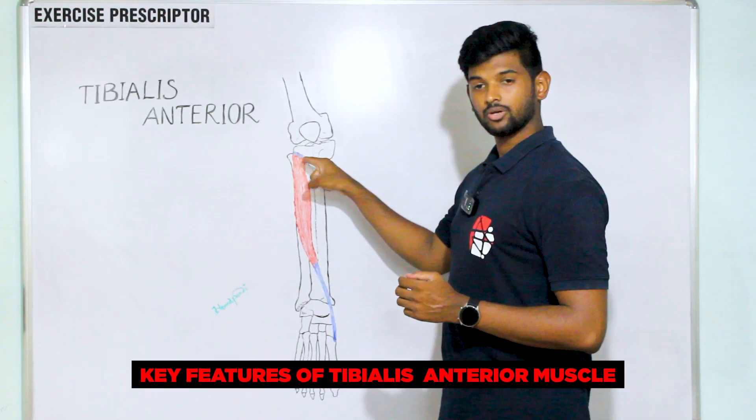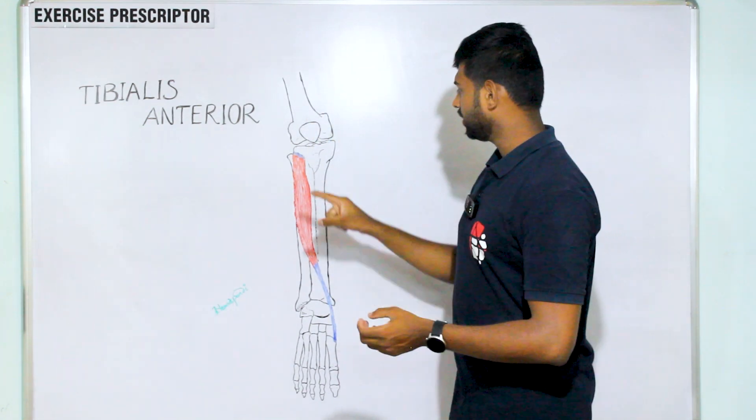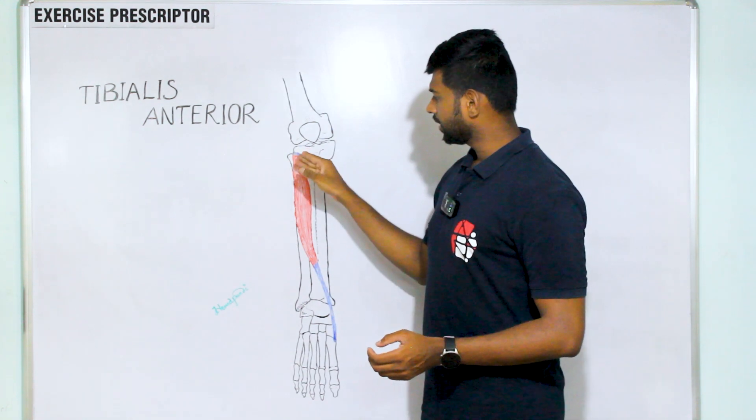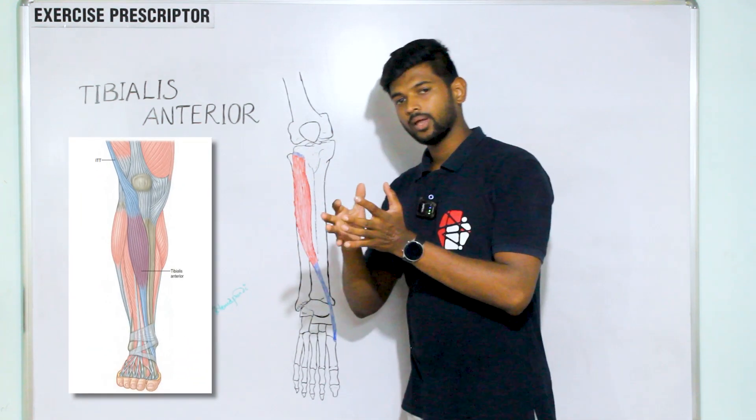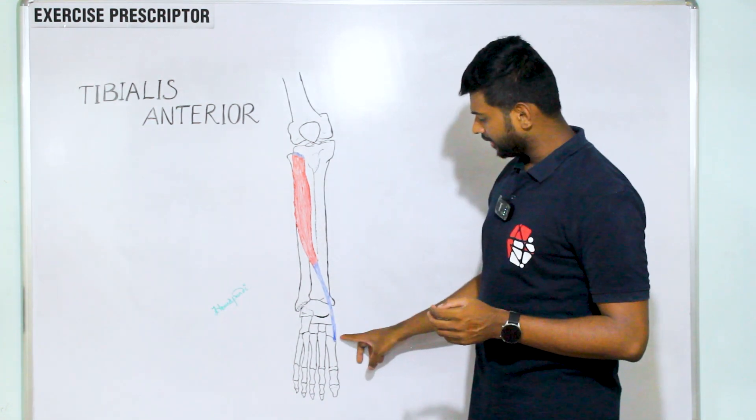Key features of tibialis anterior: proximal attachment of the tibialis anterior is connected with the quadriceps and forms the superficial front line. And also the tibialis anterior proximal attachment connects with the IT band and forms the spiral myofascial line.